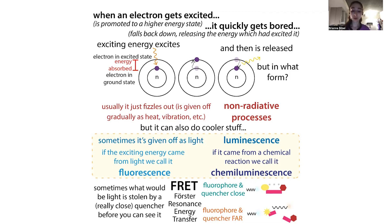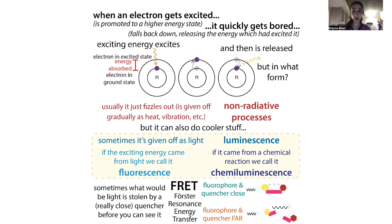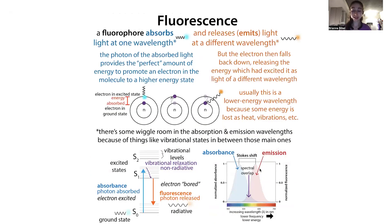Phosphorescence is like fluorescence except that fluorescence typically happens very fast — you shine light at one wavelength and it gives back light at a different wavelength, typically with a machine. The emission wavelength is different from the absorbance wavelength because you lose a little bit of energy — some energy is lost to vibrational levels, heat, and collisions, so the emitted wavelength is longer and at lower energy than what was absorbed.